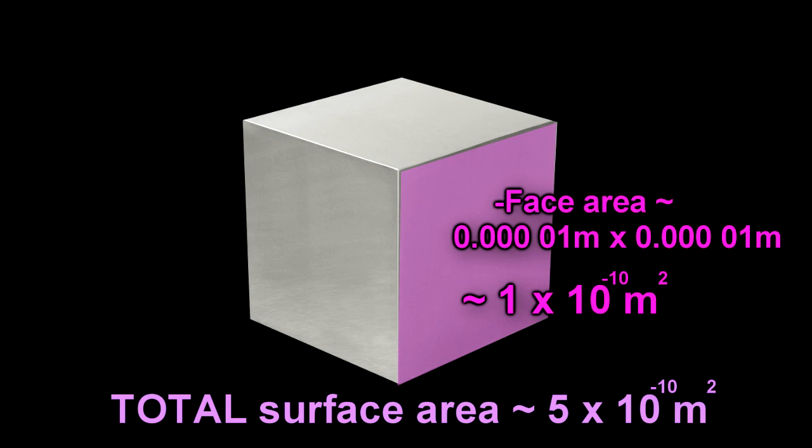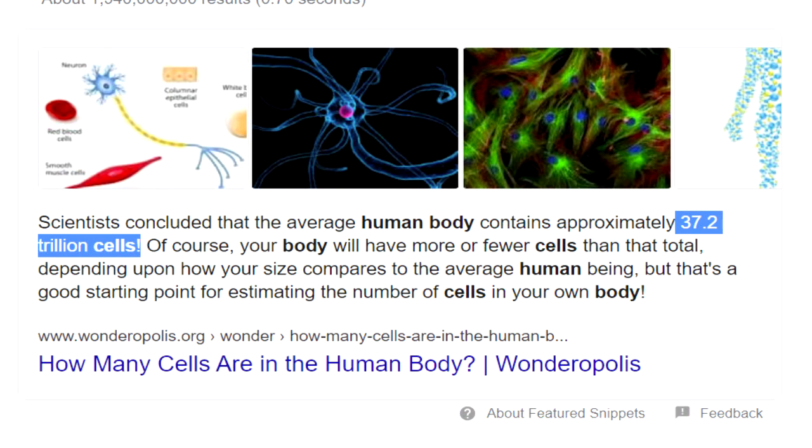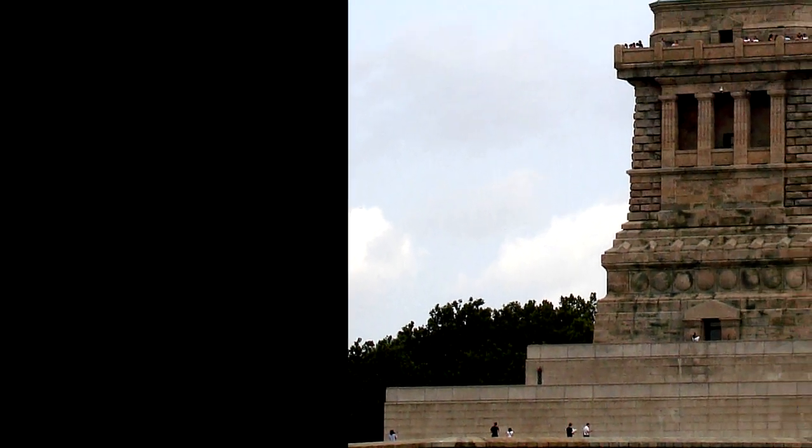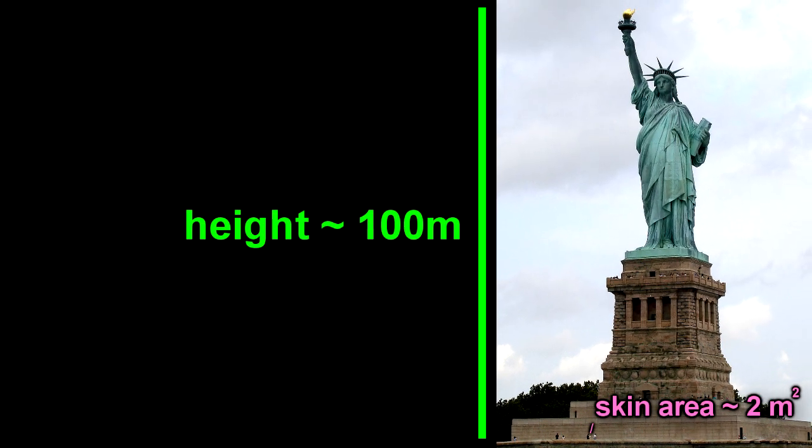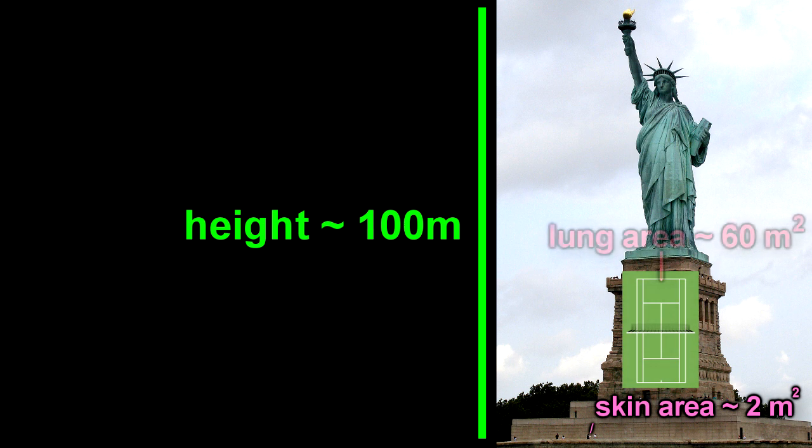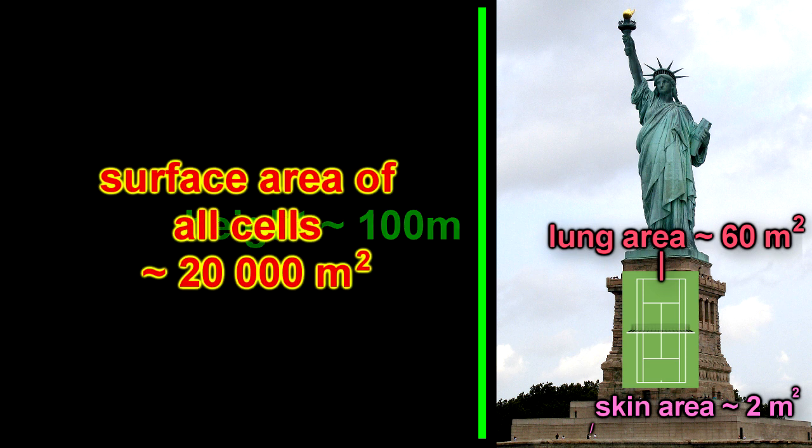So now we've got the facts all together. The human body, just the outside, is about two square meters. The lung area, the gas exchange mechanism, is some 60 square meters. But just the surface area of your cells is some 20,000 square meters.